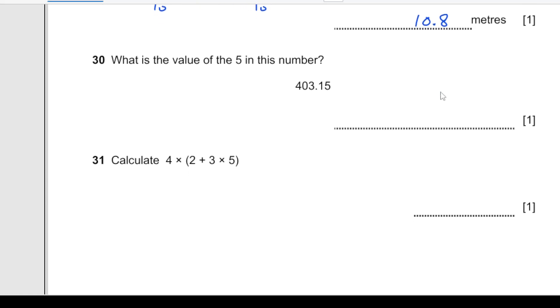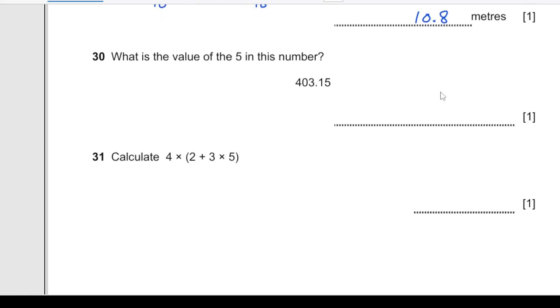What is the value of 5 in this number 403.15? The value of 5 is 5 over 100, or we can say 0.05. I will write down 5 over 100.